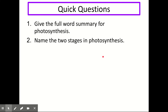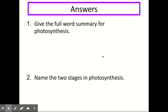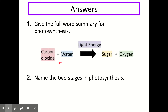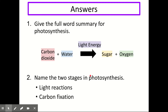Let's try a couple of quick questions on what we've covered so far. Pause the video and try the questions either by saying them out loud or writing them down, then press play to go through the answers. The first question asks you to give the full word summary for photosynthesis — carbon dioxide and water as raw materials, light energy above the arrow, and sugar and oxygen as products. Naming the two stages: the light reactions and carbon fixation.